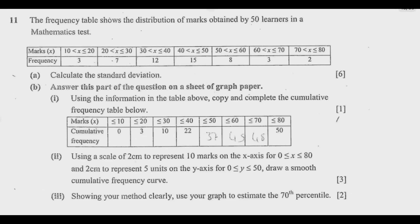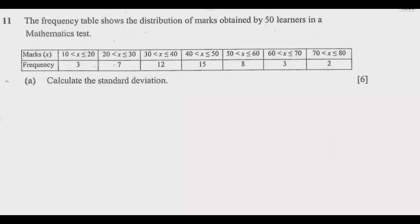Question 11 is on statistics. The frequency table shows the distribution of marks obtained by 50 learners in a mathematics test, with marks on the first row and frequency on the second row. This is a standard question that always comes up in statistics, so once you understand the process it becomes a giveaway mark, and I would encourage you to choose this question in the exam.